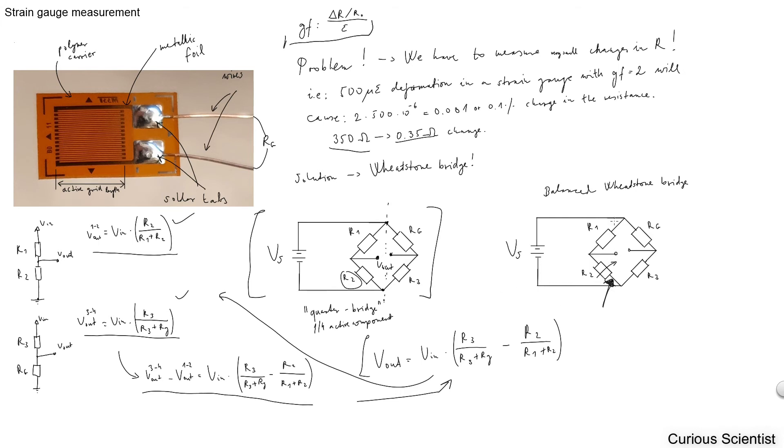There are other types of bridges. You can have a half bridge and also a full bridge. You connect different resistors, different strain gauges into your Wheatstone bridge, and you can account for different types of strains, or different kinds of effects, like temperature effect, for example.